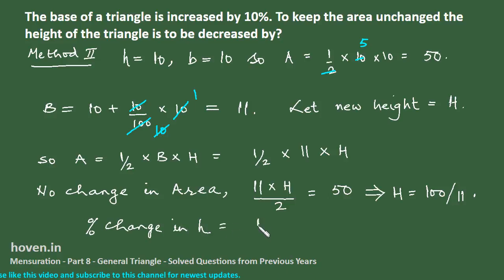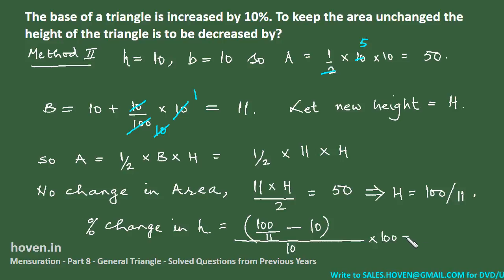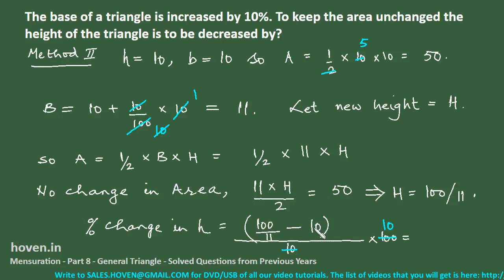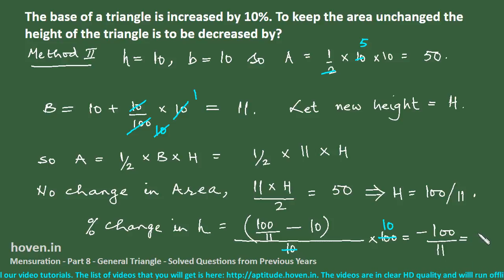The percent change in height = (new height − original height) / original height × 100 = (100/11 − 10) / 10 × 100. This simplifies to (100 − 110) / 11 × (1/10) × 100 = −100/11, which is the same result as Method 1.